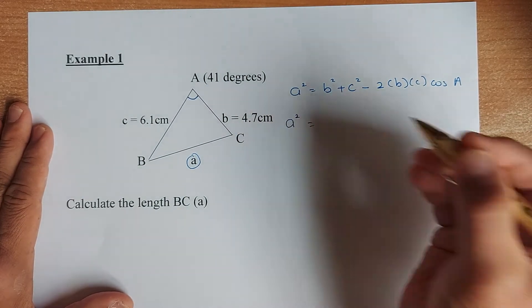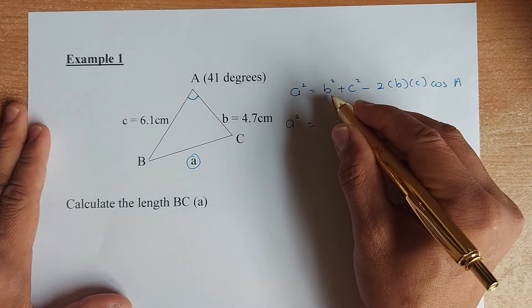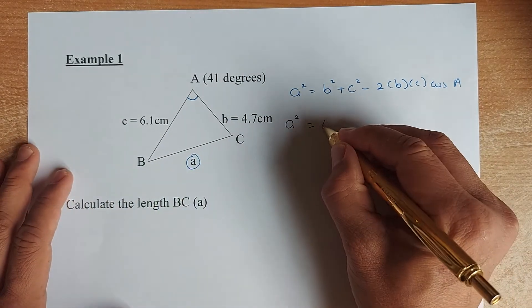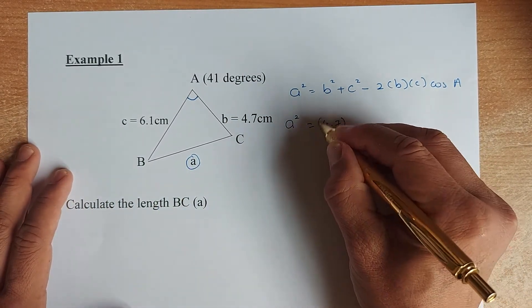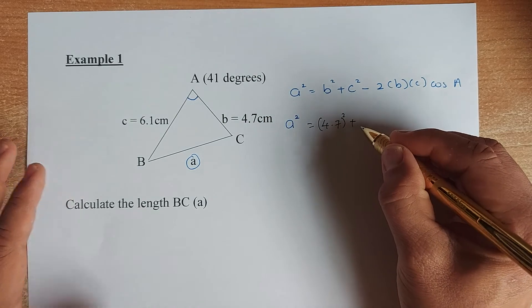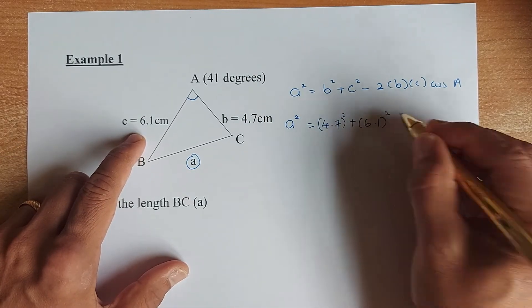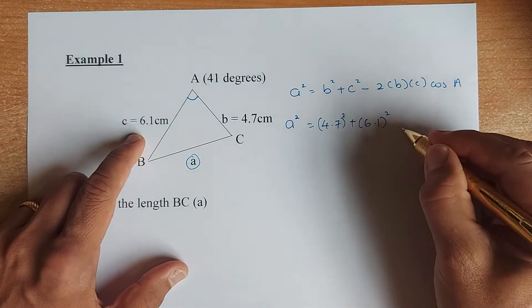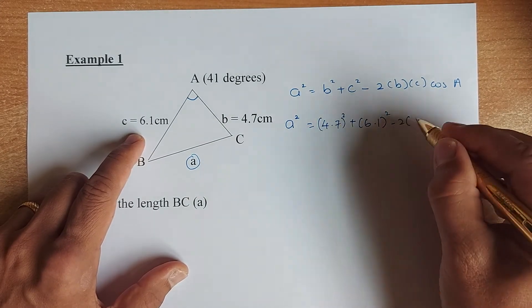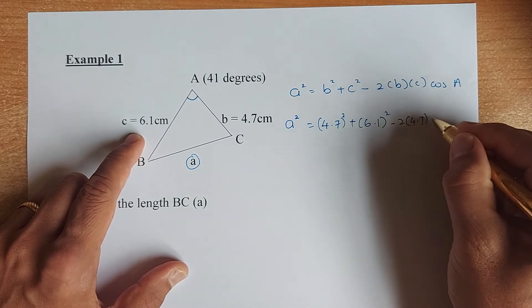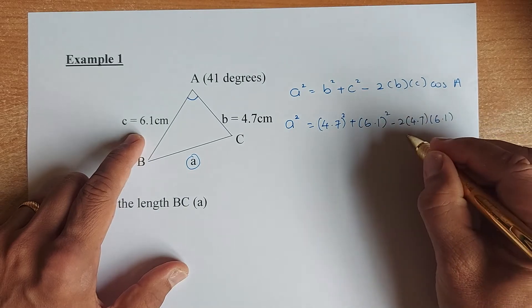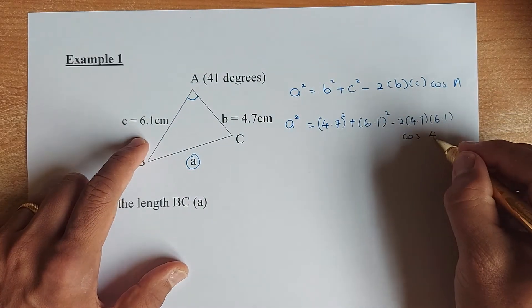So a squared is equal to, instead of b, you're going to put 4.7 squared plus your c squared is 6.1 squared. Then you're going to minus 2 bracket 4.7, 6.1 cosine and the angle is 41 degrees.